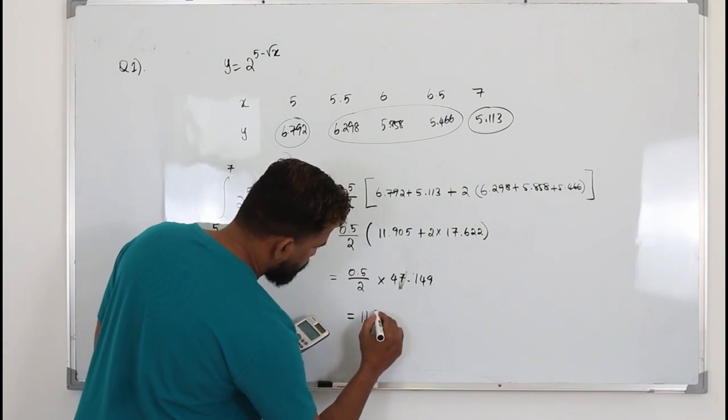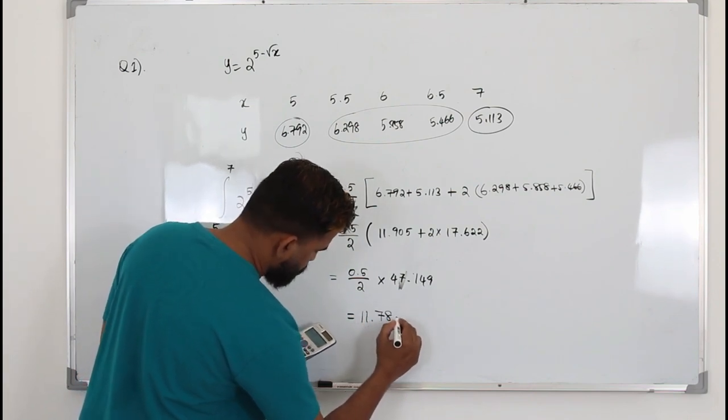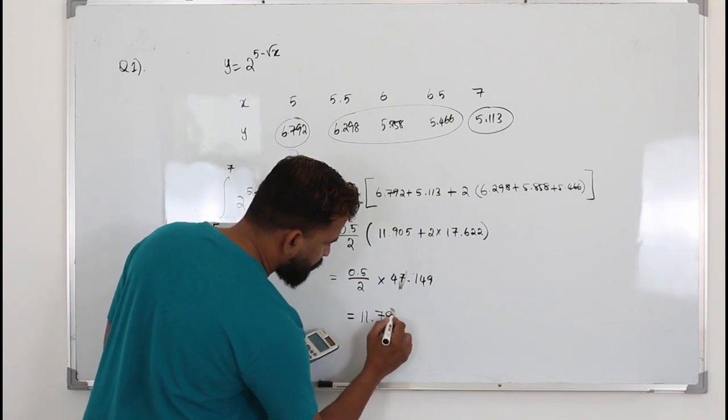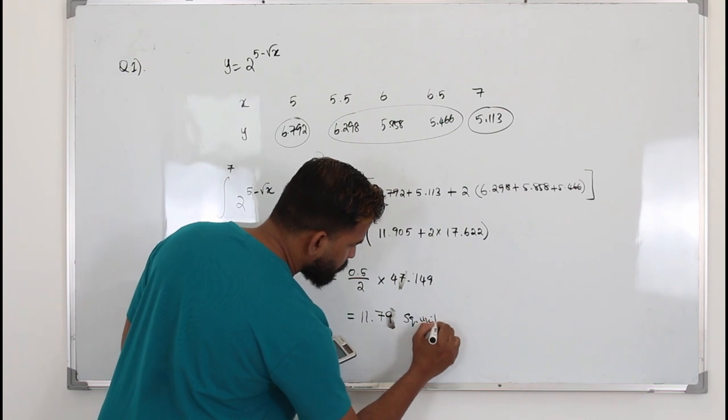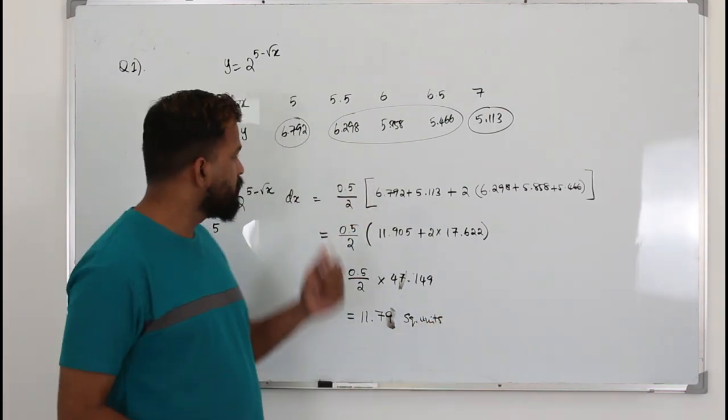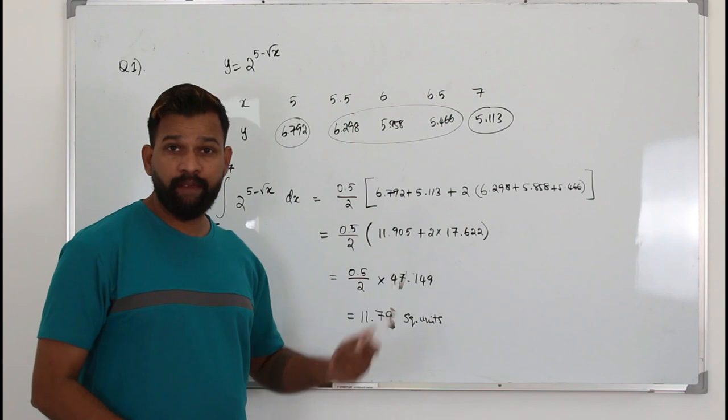So we got 11.78725, but they want the answer to two decimal places. So you can write it as 11.79 square units.